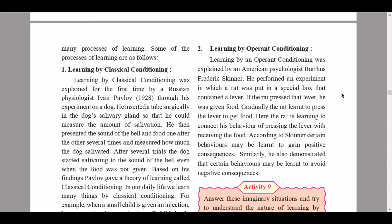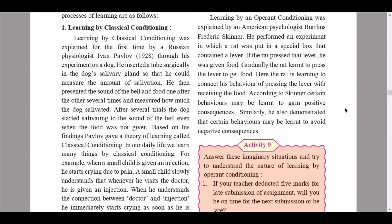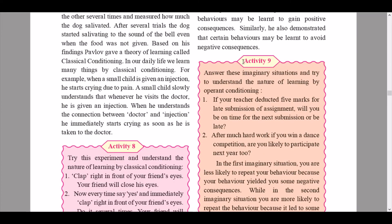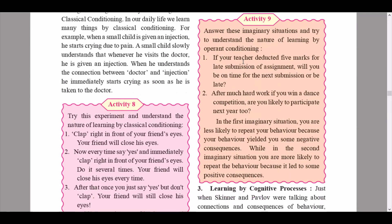Learning by operant conditioning was explained by American psychologist B.F. Skinner. He performed an experiment in which a rat was put in a special box containing a lever — if the rat pressed the lever it was given food, and gradually the rat learned to press the lever to get food. According to Skinner, certain behaviors may be learned to gain positive consequences, and similarly, certain behaviors may be learned to avoid negative consequences. Operant conditioning involves both positive and negative consequences.